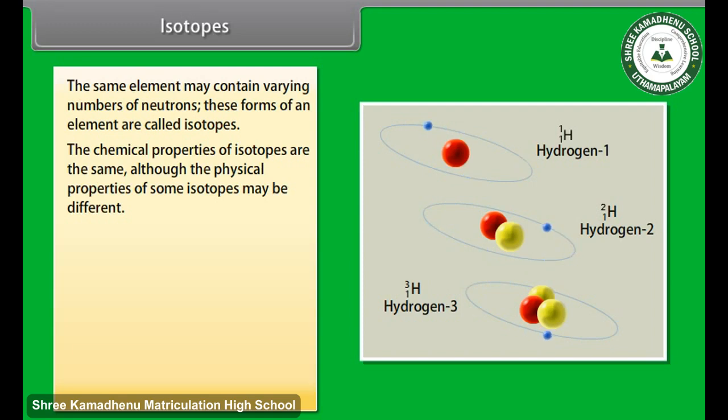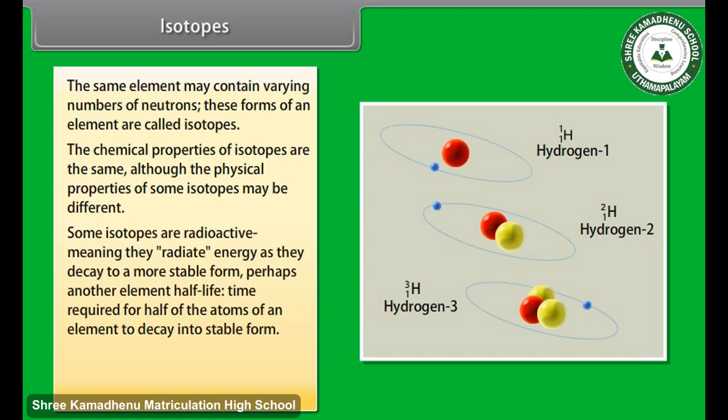Some isotopes are radioactive, meaning they radiate energy as they decay to a more stable form, perhaps another element. Half-life is the time required for half of the atoms of an element to decay into stable form. Another example is hydrogen with atomic number of 1 can have 1, 2 or 3 neutrons.